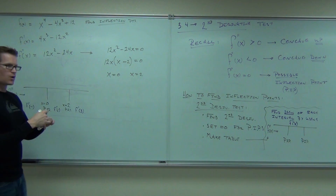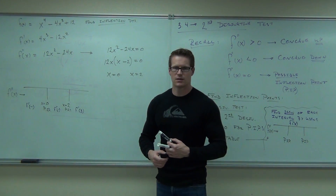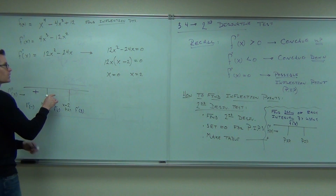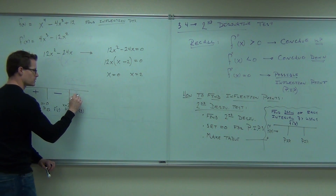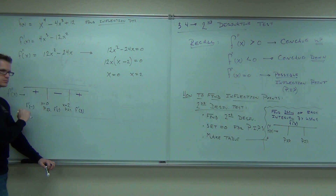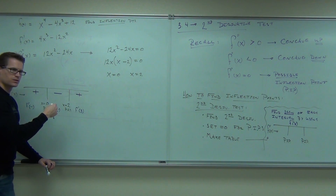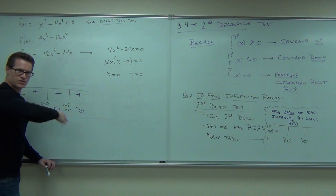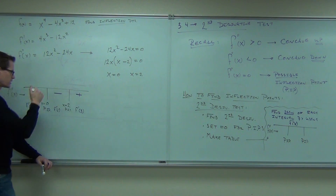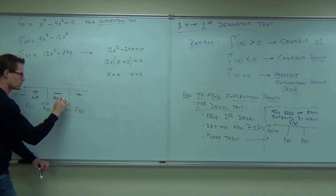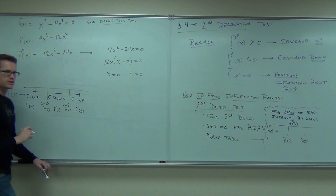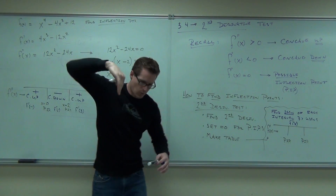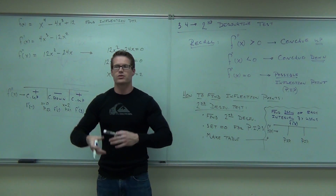For negative one, looks like we're going to get positive. How about one? How about three? In this interval, are we concave up or concave down? We are concave up — then down — then up. That's the concavity: concave up, down, up. I don't mean increasing and decreasing. Increasing means the function's going up. Concave up means the way it would be going up — the shape of the graph — not necessarily whether you're going higher or lower. That's the difference.